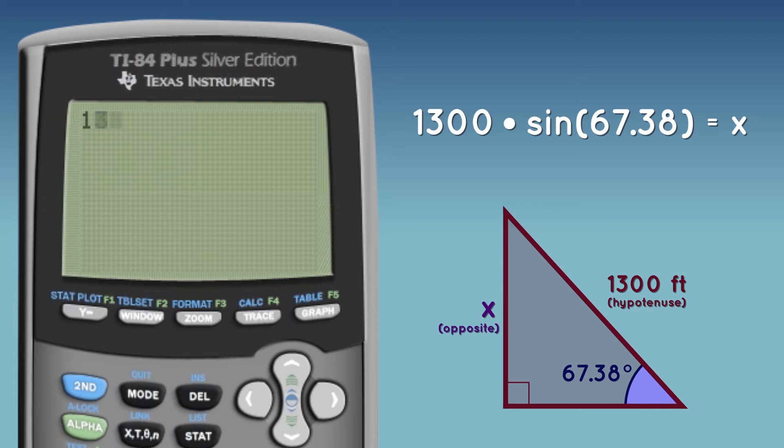To plug that in our calculator, we enter 1,300 times the sine of 67.38, close parentheses. And our answer is 1,199.99, which will round to 1,200 feet. And that's it.